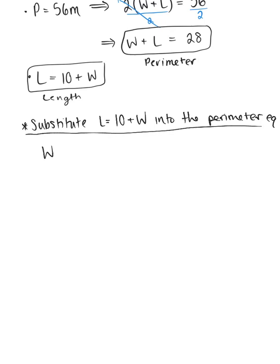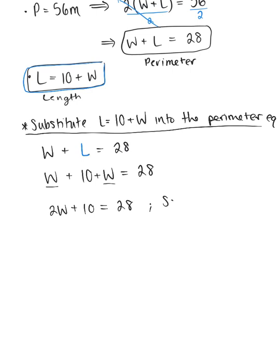Our perimeter equation was W + L = 28. We'll replace L with our length equation. This gives us W + 10 + W = 28. Combining like terms: 2W + 10 = 28. Now we're ready to solve for the width.